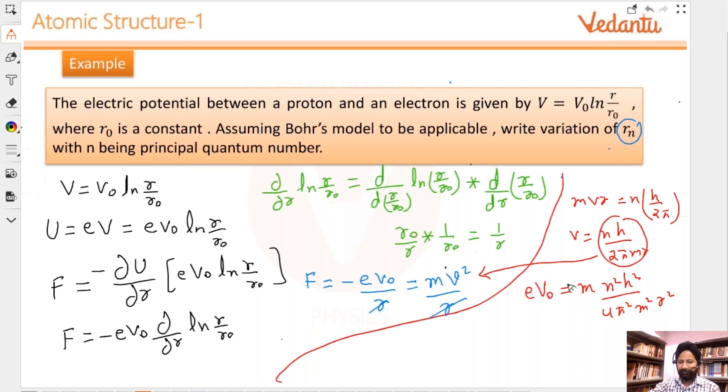So eV₀ equals mass times velocity squared, which is n²h²/4π²m²r². You can cross out whatever you can. If there is a mistake in calculation, you got to point it out. Taking the square root gives you r = nh/2π√(meV₀).